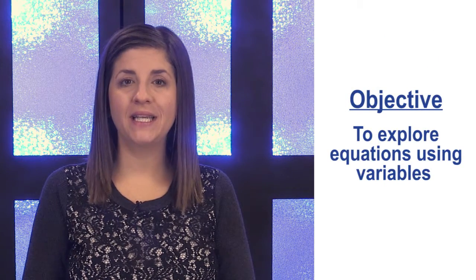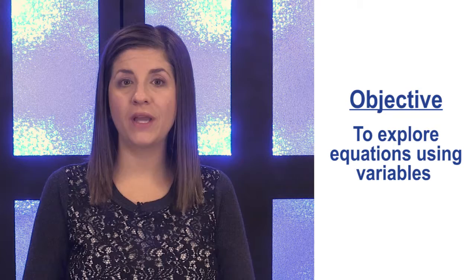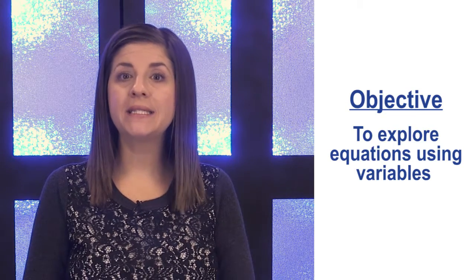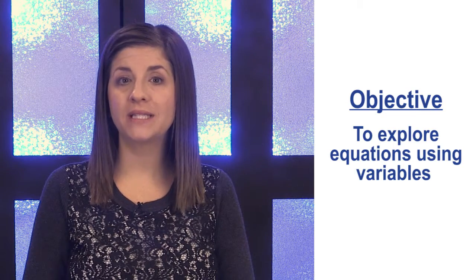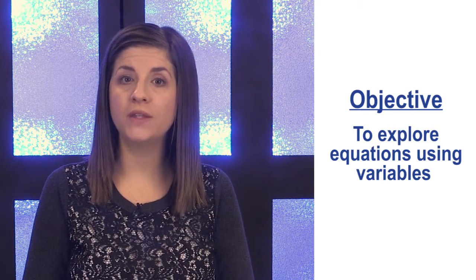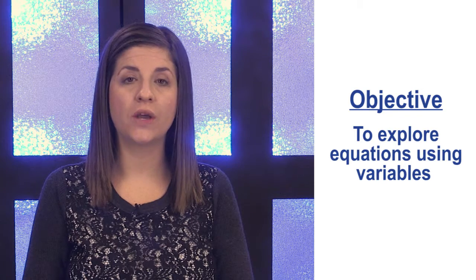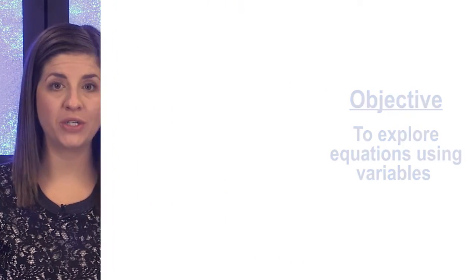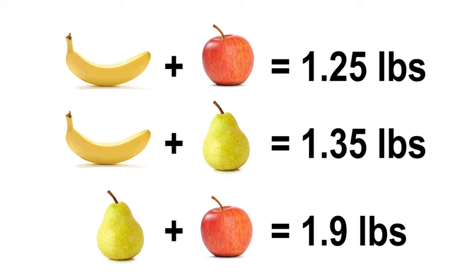The objective of this lesson is to explore equations using variables. This is a task-based lesson intended to apply the student's knowledge of equivalence to a real-world situation. The students will use substitution as well as their knowledge of equivalence to solve for the weight of each piece of fruit. There are multiple ways to solve this problem. Let's begin with the task.